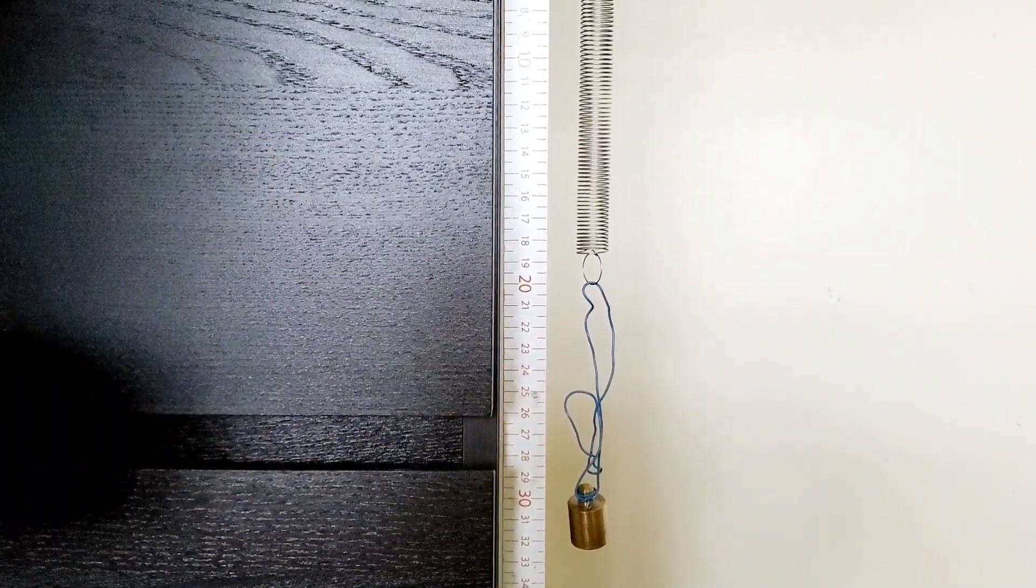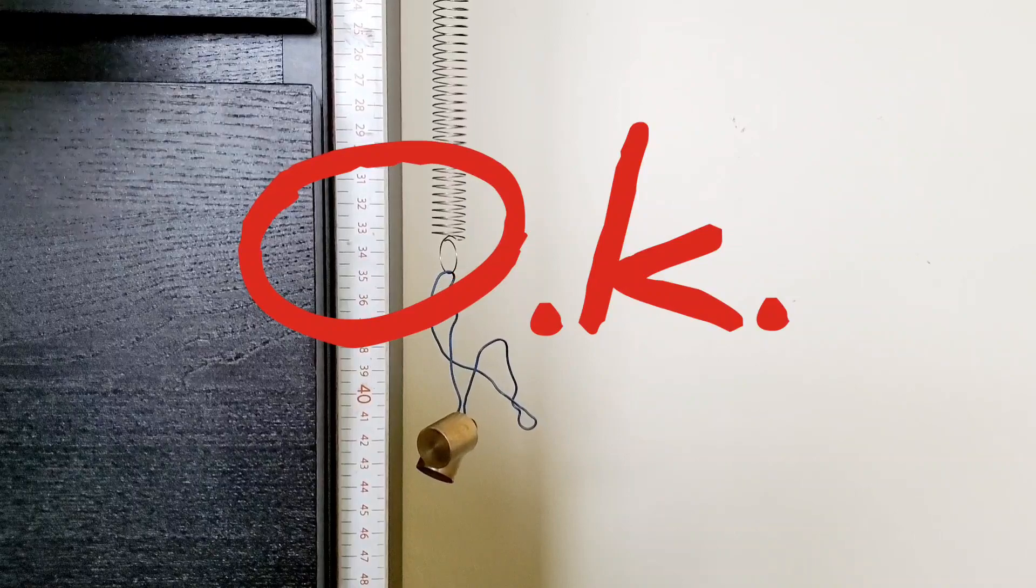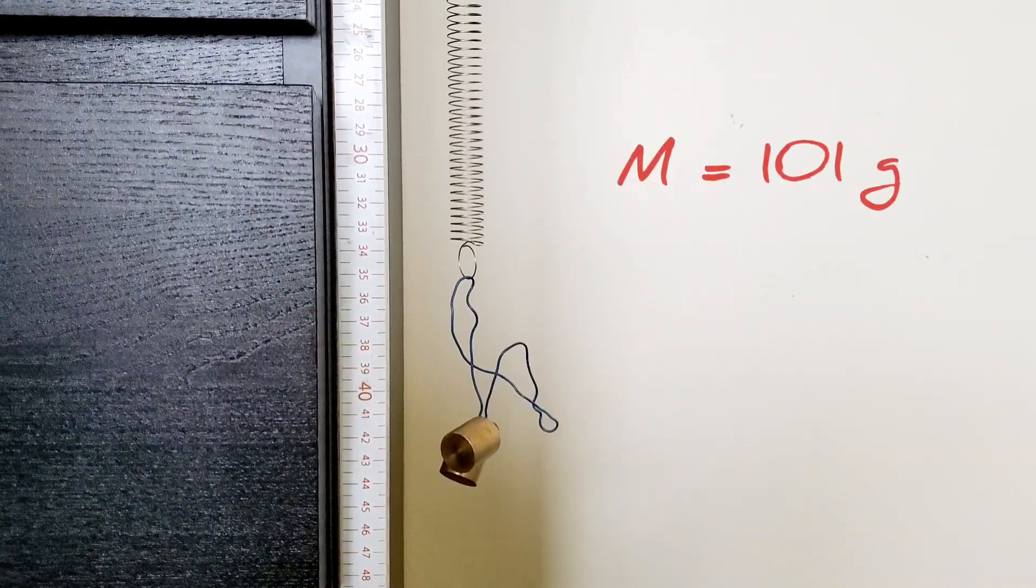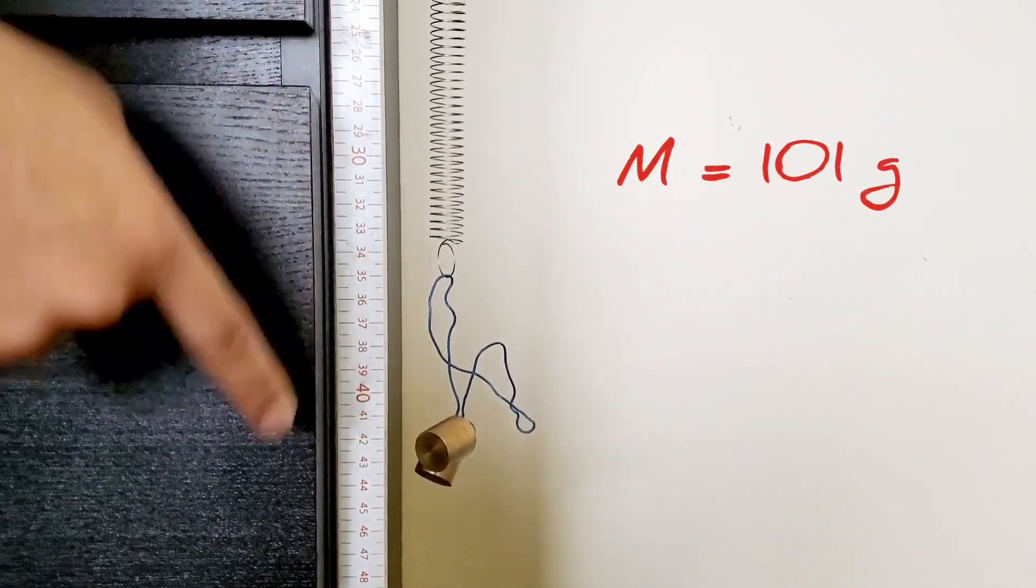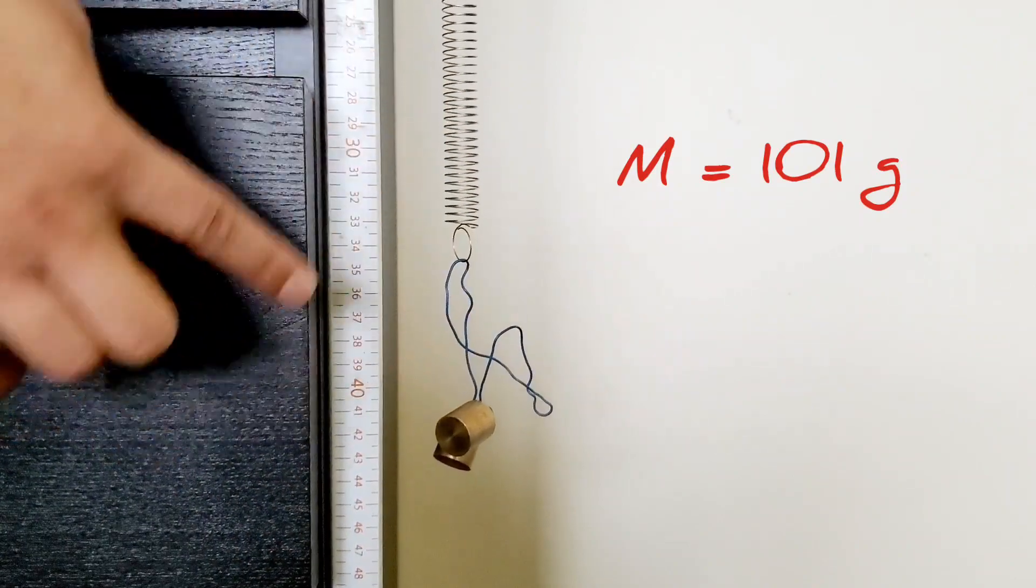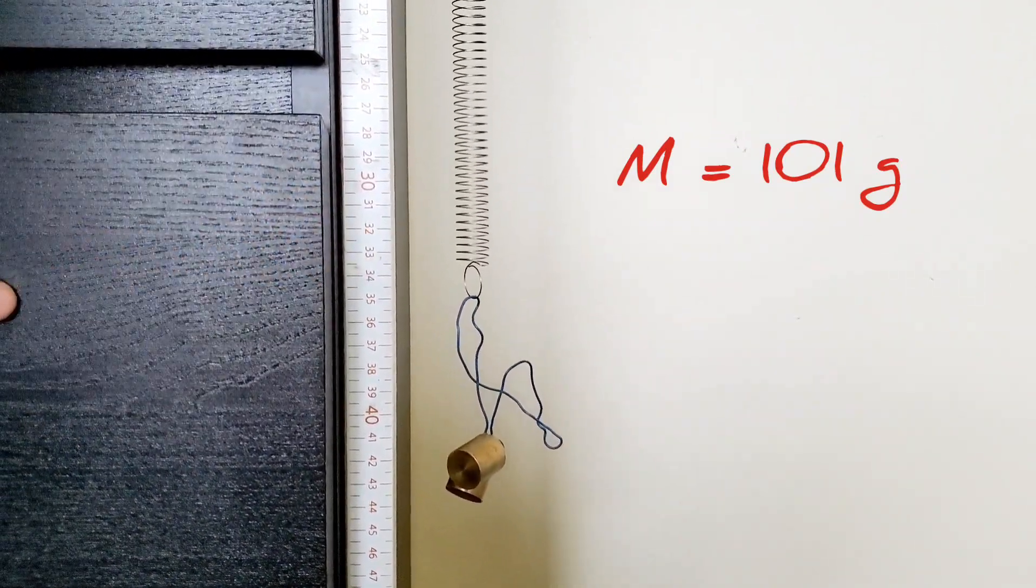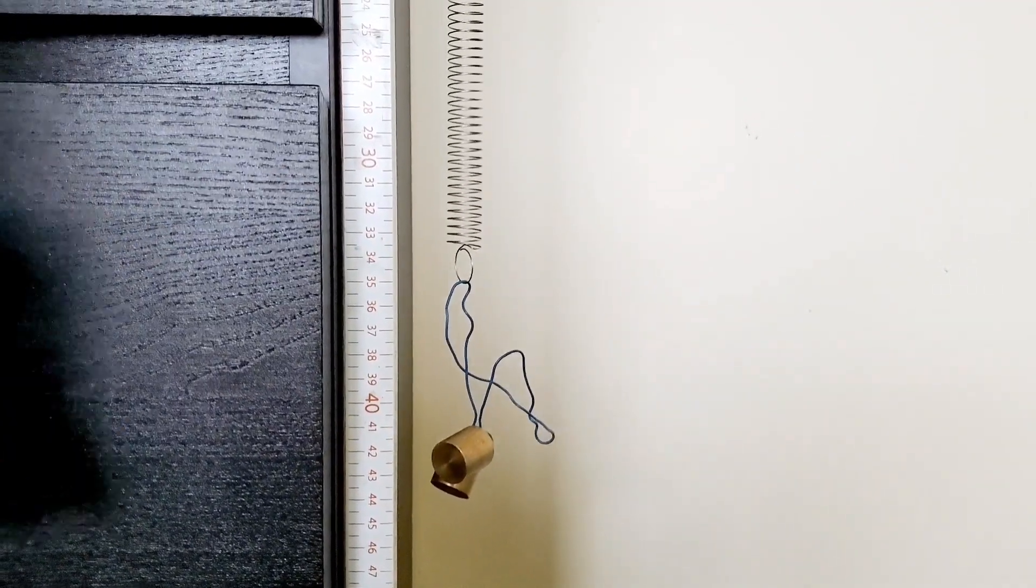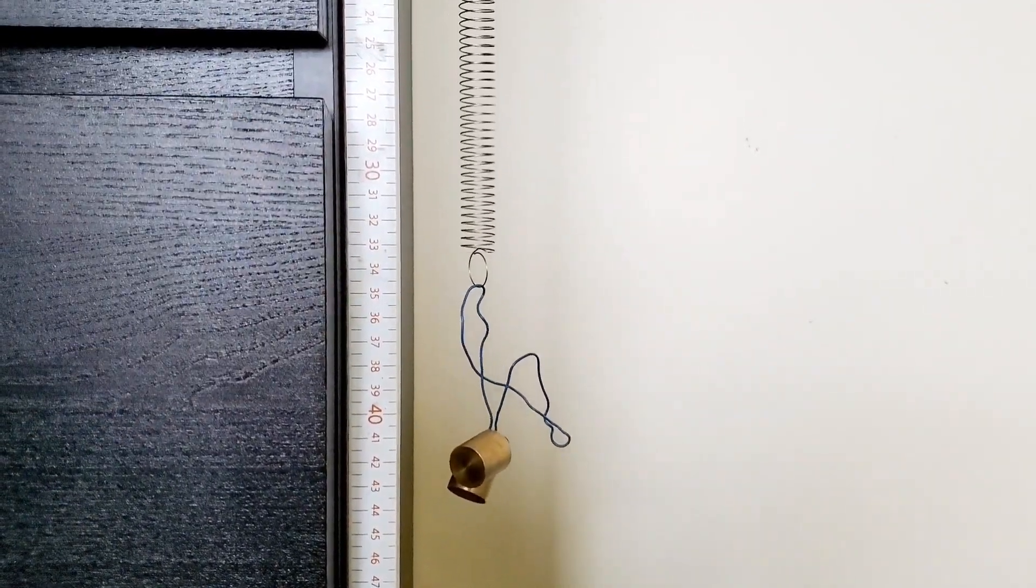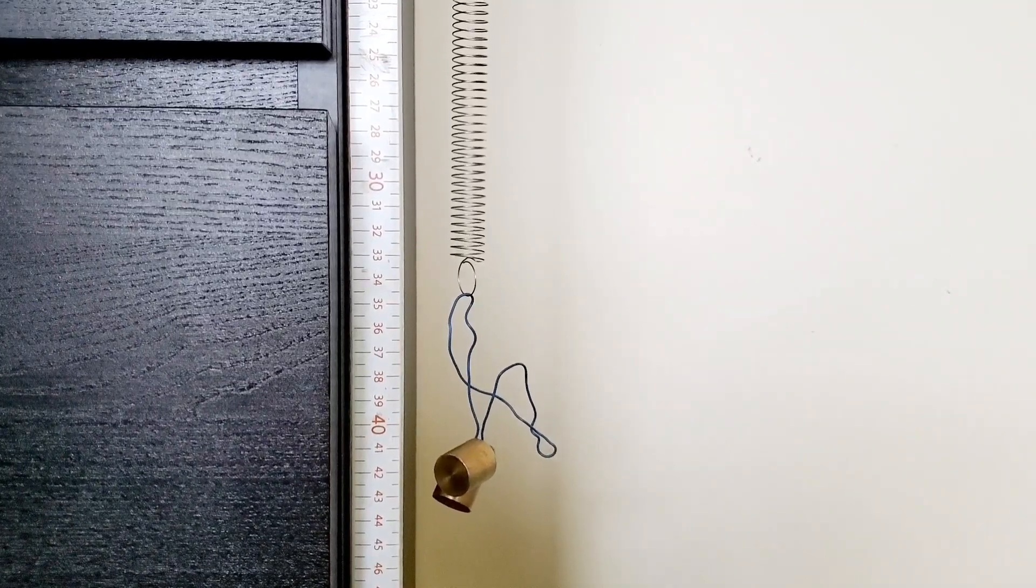Now we're going to add a second mass to it. Okay, so now we're looking at 101 grams being pulled down, and we have elongated the spring some more. So look at the center circle, see where the new stretching position is, and compare it to the initial position when the spring had no mass on there.